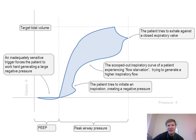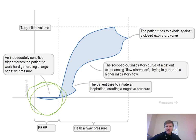Another finding on the PV loop is the fishtail. This is an adequately sensitive trigger that forces the patient to work hard generating a large negative pressure — in other words, your sensitivity setting is not appropriate. It's a sign the sensitivity needs to be adjusted so the patient doesn't have to work as hard to trigger the ventilator.